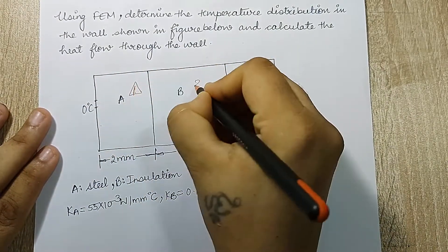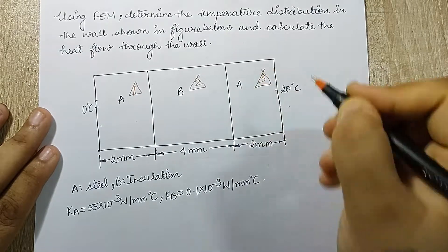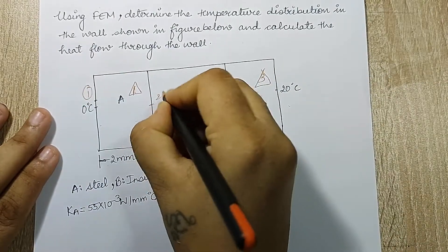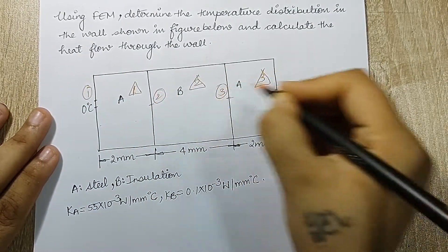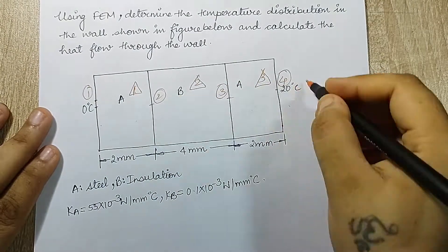So this I mark as element 1, element 2, and element 3. Here I'll mark node 1, 2, 3, and 4. These are the four nodes and three elements that I have.